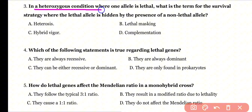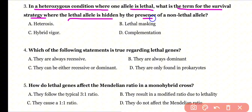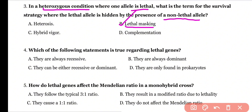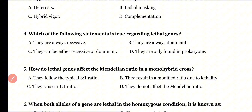Question 3: In heterozygous condition where one allele is lethal, what is the term for the survival strategy where the lethal allele is hidden by the presence of a non-lethal allele? Options: heterosis, lethal masking, hybrid vigor, or complementation? Correct answer is option B. In heterozygous condition, if one allele is lethal and the other is non-lethal, the best way to hide the lethal allele is lethal masking.